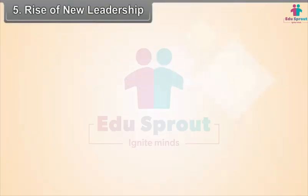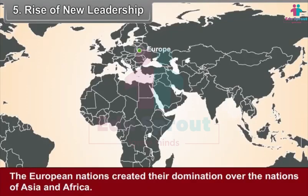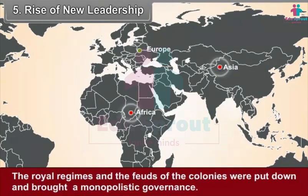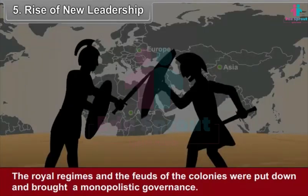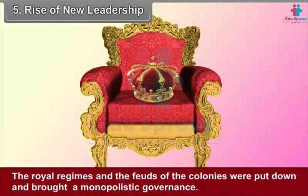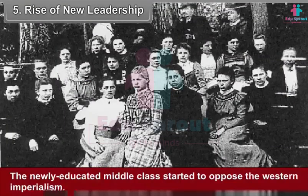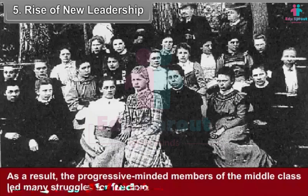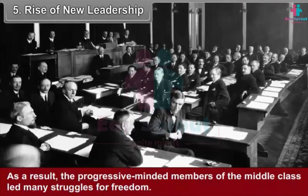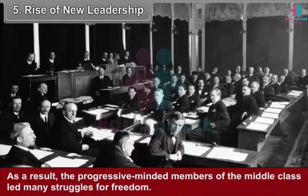Fifth, rise of new leadership. The European nations created domination over the nations of Asia and Africa. The royal regimes and the feuds of the colonies were put down and a monopolistic governance was brought in. The newly educated middle class started to oppose Western imperialism. As a result, the progressive-minded members of the middle class led many struggles for freedom.